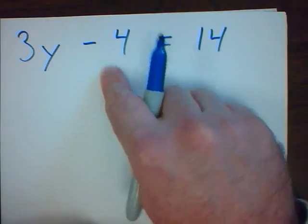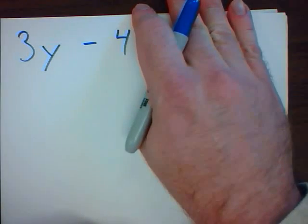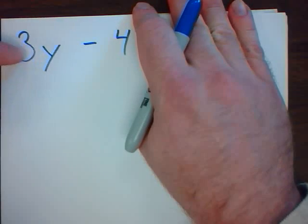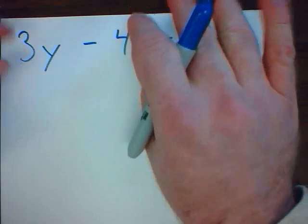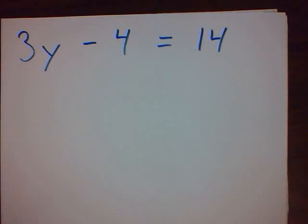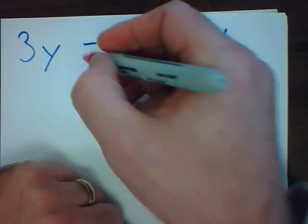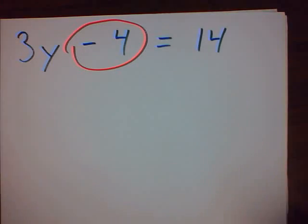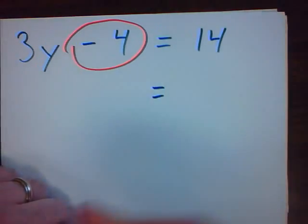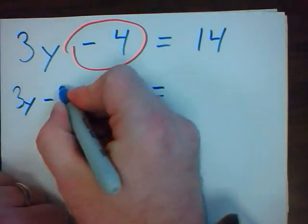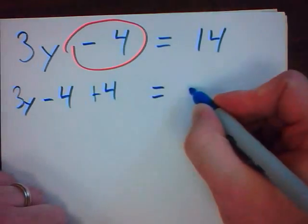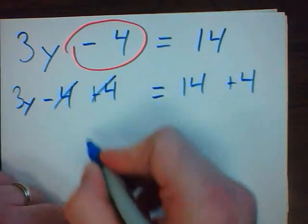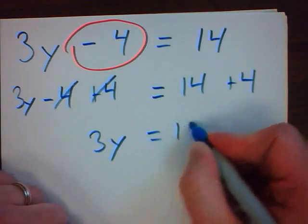Once again, attempt to simplify using ordinary BEDMAS. Brackets, exponents, division, multiplication. 3 times y, I can't do it. Now I'm going to start getting rid of things. And I get rid of things by doing BEDMAS backwards. Addition and subtraction will be gotten rid of first. The opposite of subtracting 4 is adding 4. And whatever I do to one side, I must do to the other. These will cancel. 3y will equal 18.